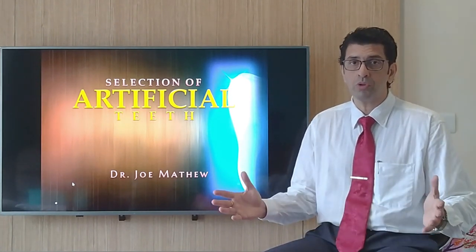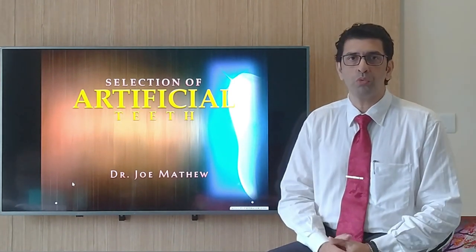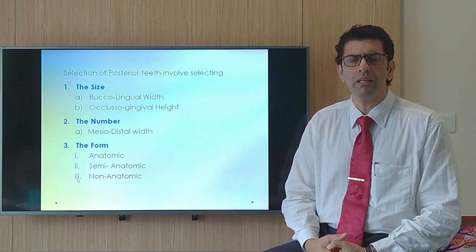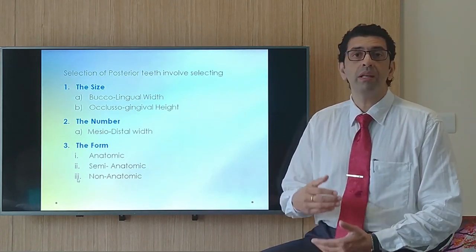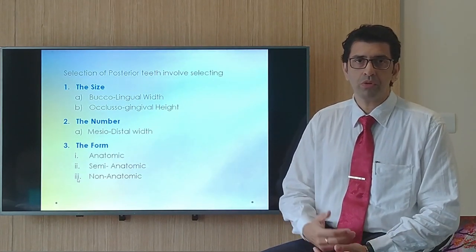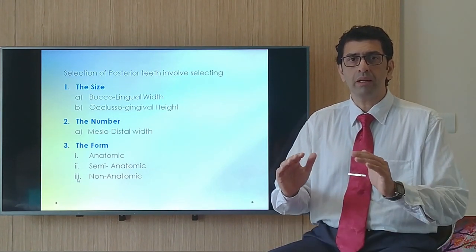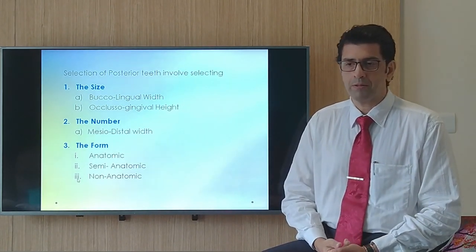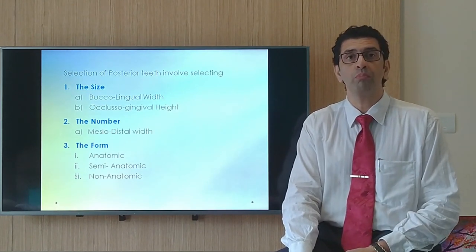This is taken from different textbooks, so do verify the textbooks in your syllabus and make notes accordingly. Let me give you a broad overview of how to select posterior teeth forms. The three things involved in posterior teeth selection are: number one, the size; number two, the number of teeth you want to select; and third, the form of the teeth. We're going to look at these at an undergraduate level — there are some modifications at postgraduate level, especially regarding mesiodistal width.